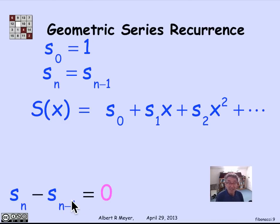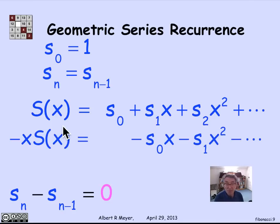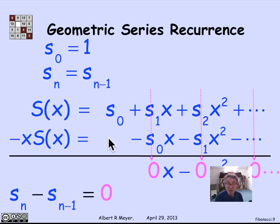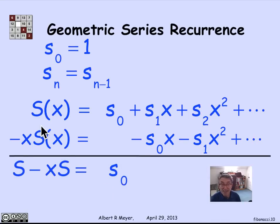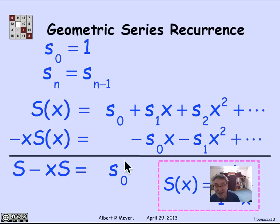And that is the hint that to get the Sn minus 1's to line up with the Sns, I should right shift S. Namely, I multiply S by x, and I get the n minus 1's lined up with the n's. And then when I subtract, everything is 0 except that first S0, which of course is 1. And over here, I have S times 1 minus x. So we get the formula we've already derived, that S of x is equal to 1 over 1 minus x.